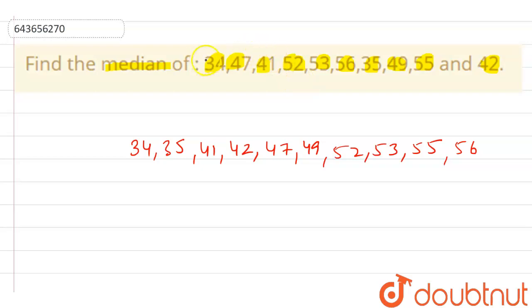And here as we can see, we have a total of 10 observations. And we know that when we are having the observation as even number, then the median is...